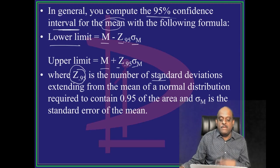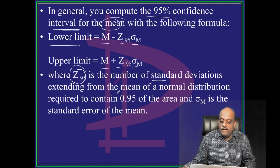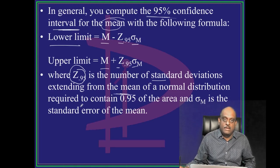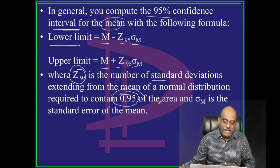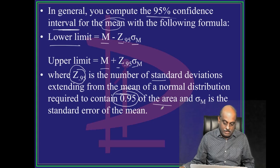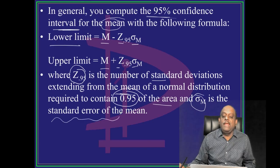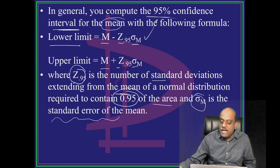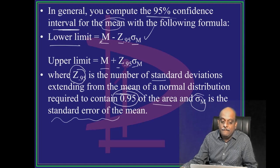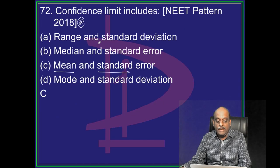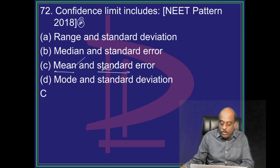Z is the number of standard deviations, the number of standard deviations extending from the mean of a normal distribution to contain 0.95, it is 95% of the area. And the Sigma M means standard error of mean. So you require standard error of mean and you require the mean value. So mean and standard error of the mean, they are required for calculating the confidence limit.